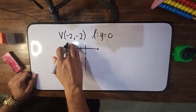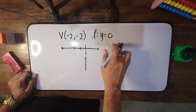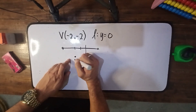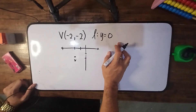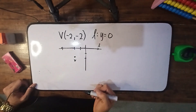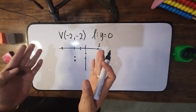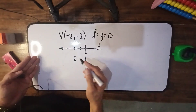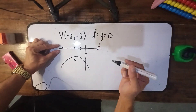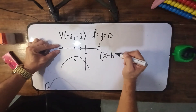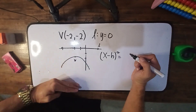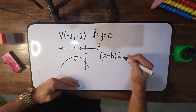Another example: the vertex is at negative 2 comma negative 2 and the directrix is y equals 0. I-visualize muna natin — negative 2 comma negative 2, nandito yun. And the directrix is y equals 0, meaning nakapatong siya sa x-axis — nandito ang ating directrix. Kung nandito ang directrix at nandito ang vertex, ibig sabihin ang directrix ay nasa opposite side ng parabola. So ibig sabihin, opens downward tayo. Since ang directrix ay naka-horizontal, ang gagamitin natin ay (x minus h) quantity squared equals negative 4c times (y minus k).